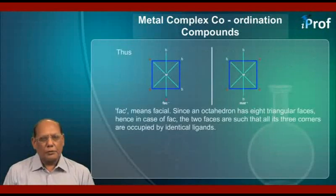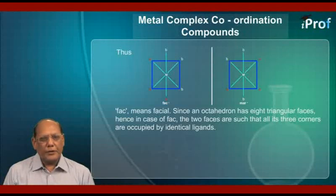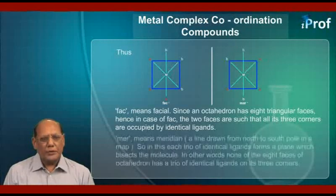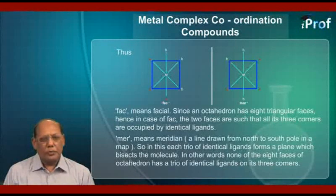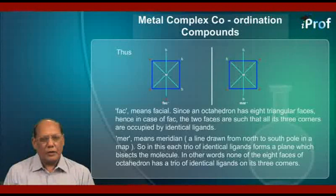As shown in the figures here, we have two geometrical arrangements. The first one is for fac and the second one is for mer. The word fac means facial. Since an octahedron has eight triangular faces, in the case of fac, the three identical ligands occupy all three corners of one triangular face. Mer means meridional — a line drawn from north to south pole on a map. In the mer form, each trio of identical ligands forms a plane which bisects the molecule. In other words, none of the eight faces of the octahedron has a trio of identical ligands on its three corners.